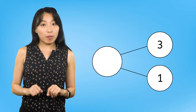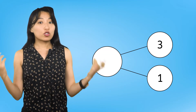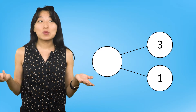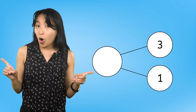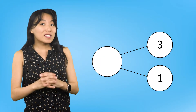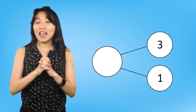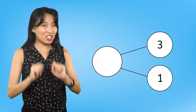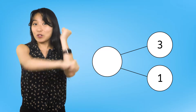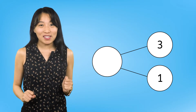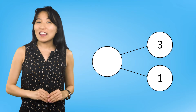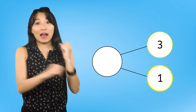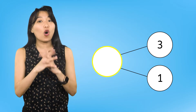Let's look at this number bond. We have two parts but no whole. That means we have to compose, or put together smaller numbers to make a bigger number — the whole. Did you know we can use addition to compose numbers? When we write addition sentences, we always add together our parts to find the whole.